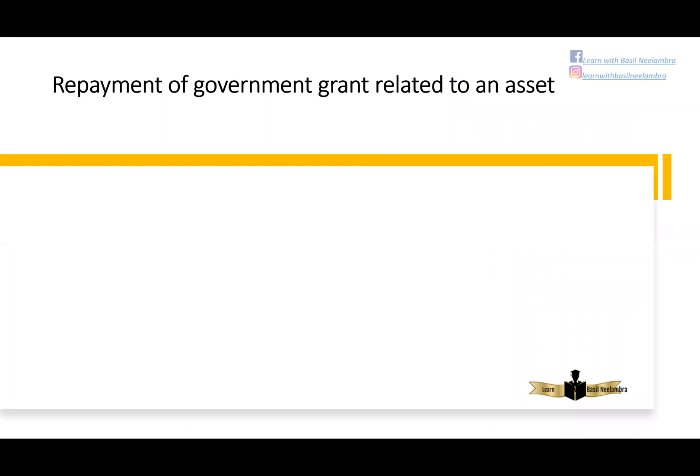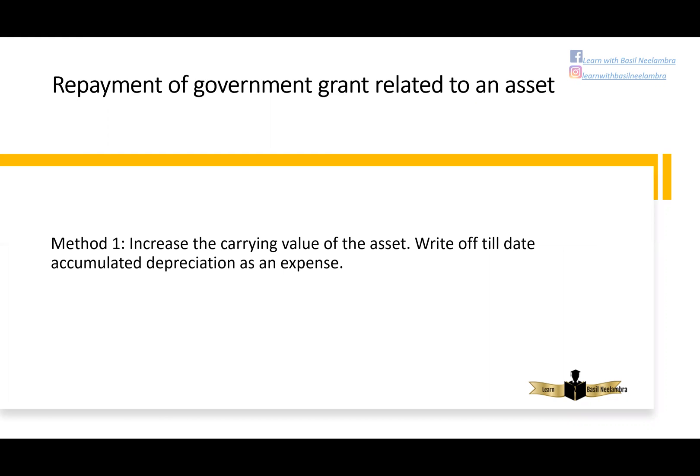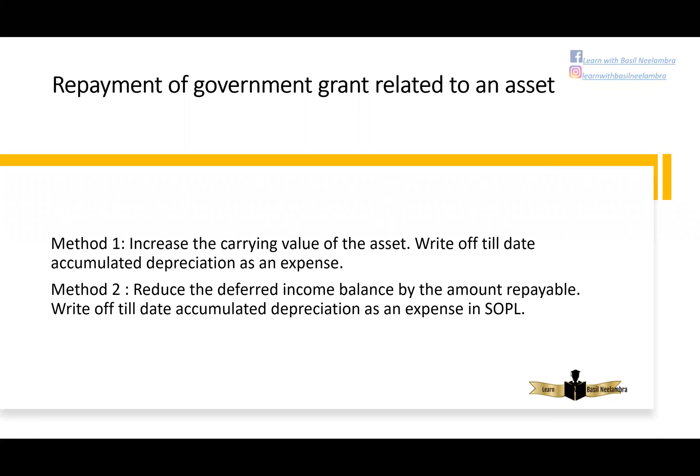If conditions set by the government are not followed, the government will ask the entity to repay the grant. In case of repayment under method 1, where the grant was reduced from the cost of the asset, you do the opposite: increase the carrying value of the asset and write off the accumulated depreciation to date. Under method 2, where the grant was treated as deferred income, reduce the deferred income balance by the amount repayable — debit the deferred income liability to cancel it — and write off the accumulated depreciation to date as an expense in SOPL.